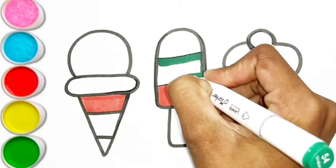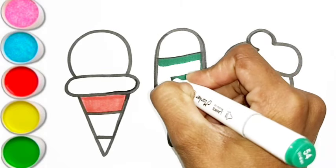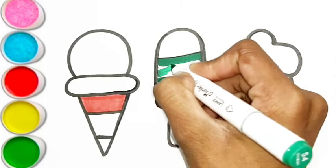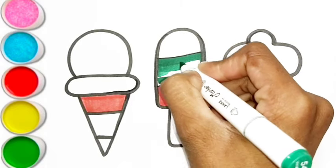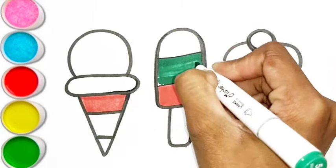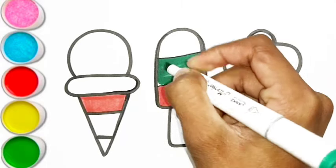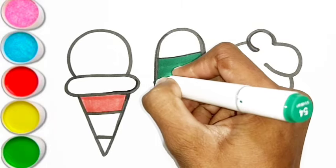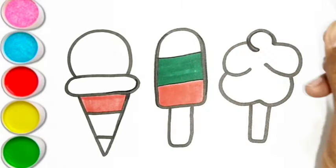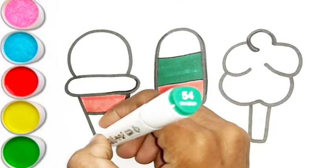J is for jump. J, j, jump. K is for kangaroo. K, k, kangaroo. L is for lion. L, l, lion.